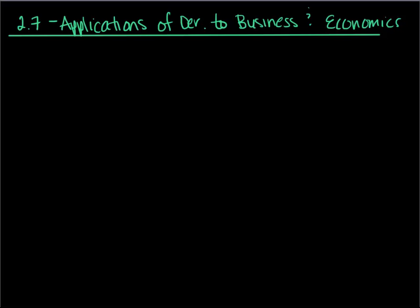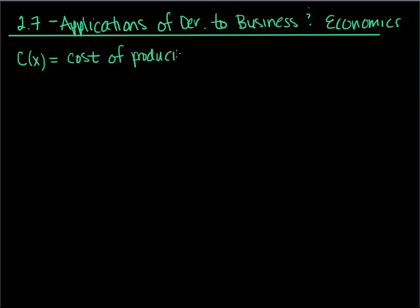So you've read the section, and I just want to point out a couple of important things. Let's define a couple of these functions. C(x) is our cost function — the cost of producing x units of whatever good we're making.